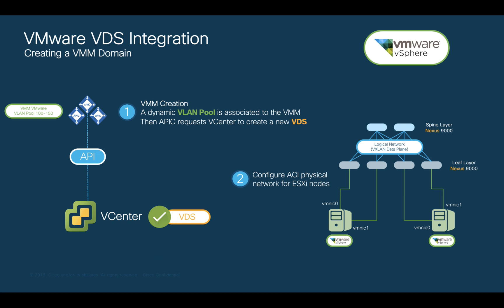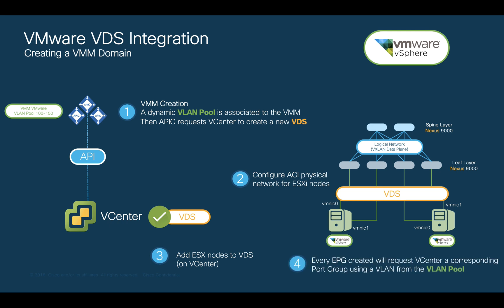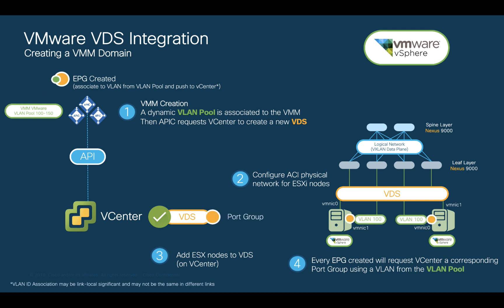Once ready, the VM admin will have to attach the ESXi nodes to the newly created VDS, and we are done. This will allow us to then perform the logical network configuration on APIC once, by creating an EPG that will automatically be pushed to vCenter through an API call requesting to create a DVS port group with its corresponding VLAN. Remember, we will cover the logical network configuration and EPGs in Module 3.